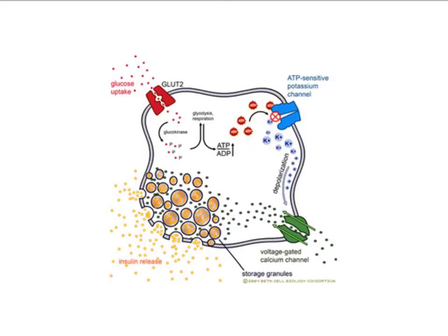Here's a better picture to review this diagram. Glucose goes through the cell membrane into the cell via a glucose 2 transporter. Glucokinase then phosphorylates glucose into glucose 6-phosphate, trapping the glucose in the cell. Glycolysis occurs and an increase in ATP to ADP ratio causes the ATP-sensitive potassium channel to close, leading to a depolarization and calcium going into the cell via a voltage-gated calcium channel. Storage granules are then secreted and insulin is released into the bloodstream.